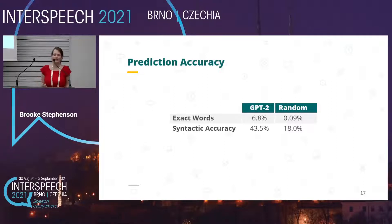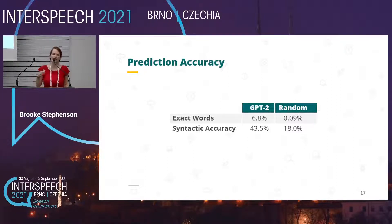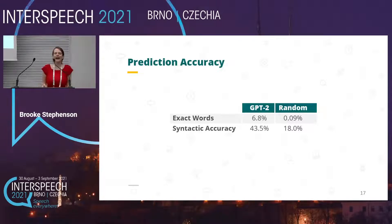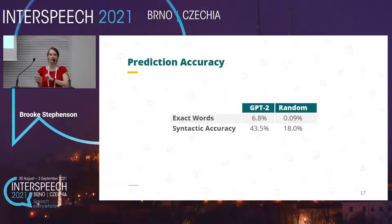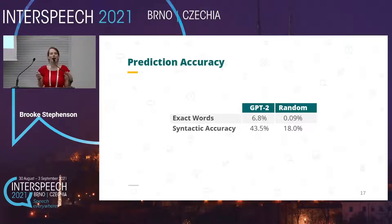Just a few statistics on prediction accuracy: GPT-2 was able to guess the exact next word 6.8% of the time, whereas in the random condition, we only get the exact next word 0.09% of the time. In terms of syntactic accuracy — whether the part of speech of the predicted next word matches the ground truth — GPT-2 is correct 43.5% of the time versus 18% for random.